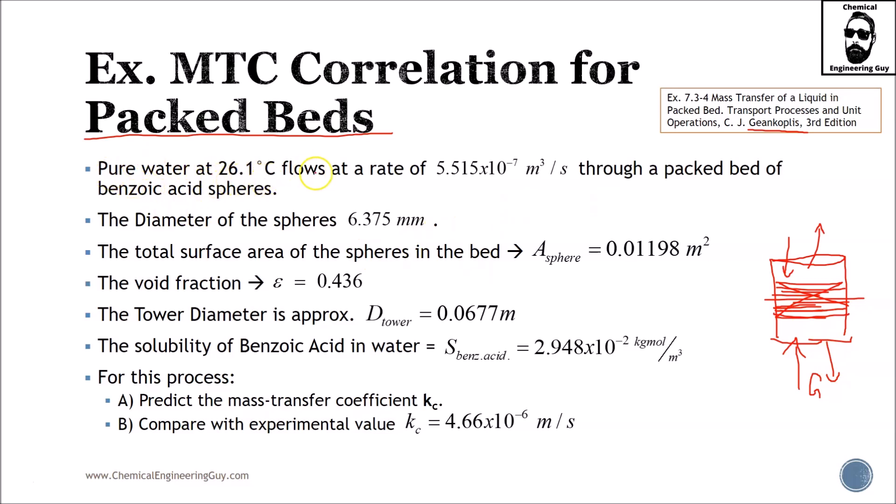Pure water at 26.1 celsius flows at a rate of 5.515×10⁻⁷ m³/s through a packed bed of benzoic acid spheres. The diameter of the spheres is 6.375 mm. The total surface area of the spheres in the bed is Asphere = 0.01198 m². The void fraction is 43.6%. The tower diameter is approximately Dtower = 0.0677 m.